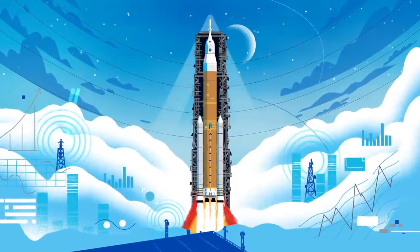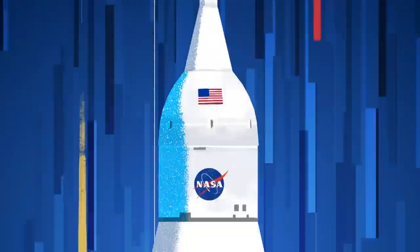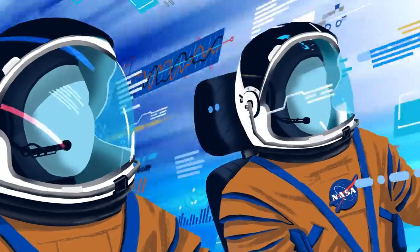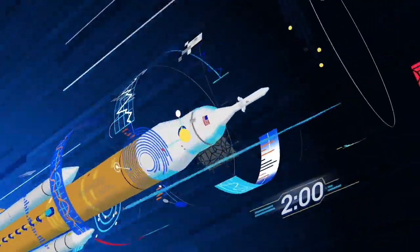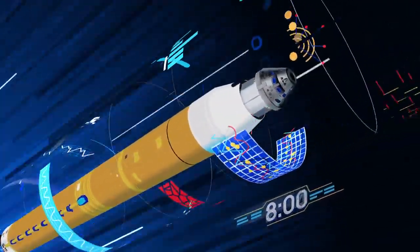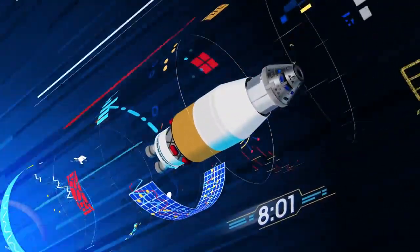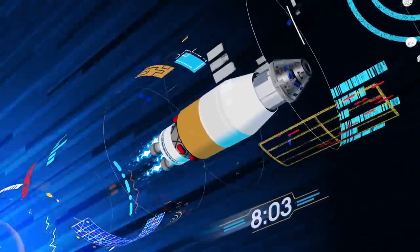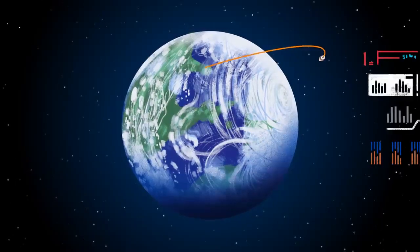All four RS-25 engines and the two solid rocket boosters come to life, thundering our crew upwards. Two minutes after ignition, the solid rocket boosters are spent and released. Eight minutes after launch, the core stage is depleted and separated. The upper stage fires briefly, placing Orion into a parking orbit around the Earth.